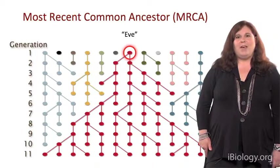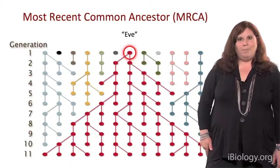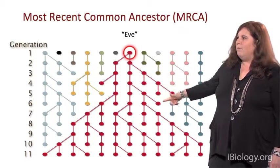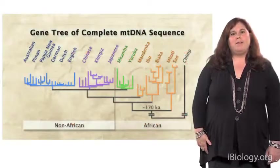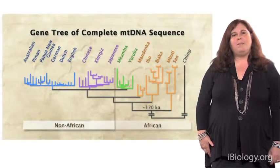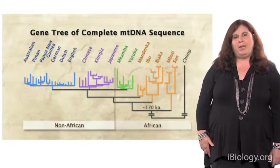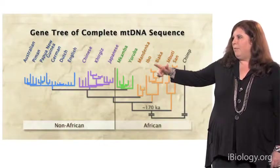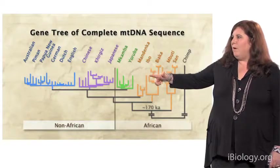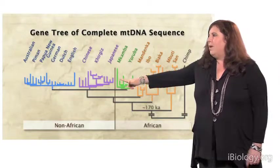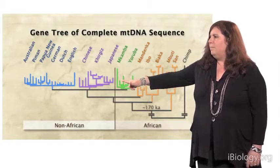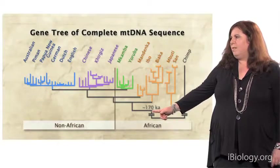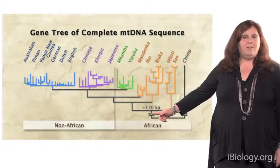One thing to remember is that Eve was not alone — she lived within a population, as shown by the other colors, but those lineages just never made it down to the present day. This is a phylogenetic tree constructed by sequencing mitochondrial DNA whole genome lineages from ethnically diverse individuals, where each individual represents a branch on the tree. Using chimpanzee as an outgroup, all modern human lineages coalesce at about 170,000 years ago, which corresponds very well with the time of origin of anatomically modern humans.